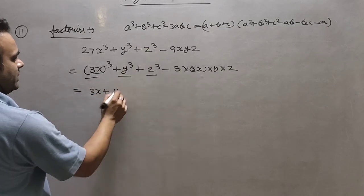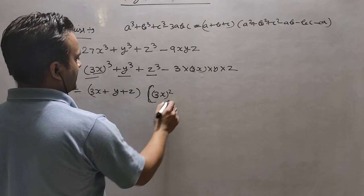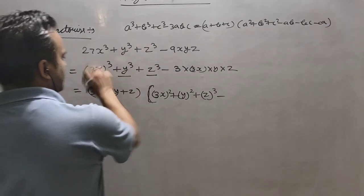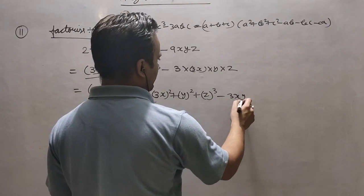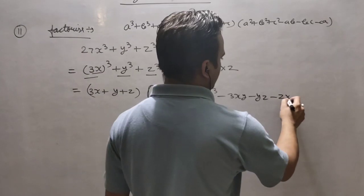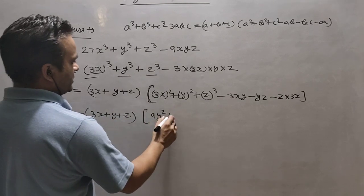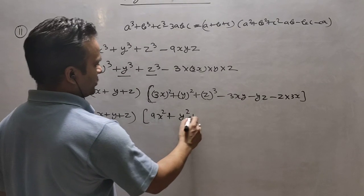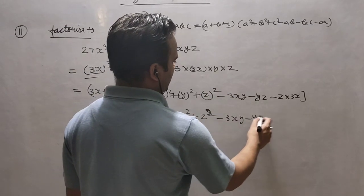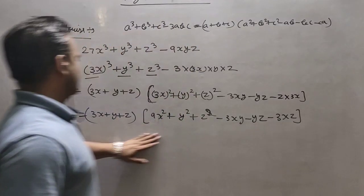So here a = 3x, b = y, c = z. Substituting: a + b + c gives (3x + y + z). Then a² + b² + c² gives (3x)² + y² + z², which is 9x² + y² + z². Then minus ab means minus 3x·y = -3xy, minus bc means -yz, and minus ca means -z·3x = -3xz.